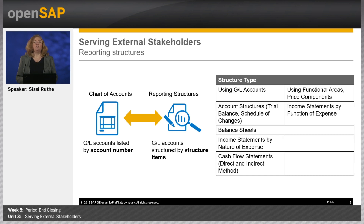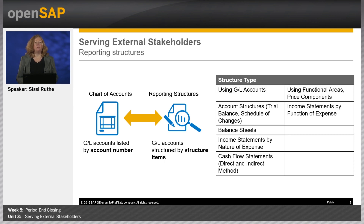For example, you need a different reporting structure for each of your balance sheets, income statements and cash flow statements. You can use several hierarchical levels in a reporting structure, and you need to assign it to one particular chart of accounts. When you add a new general ledger account to a certain chart of accounts, you also need to add it to all relevant reporting structures based on this chart of accounts.